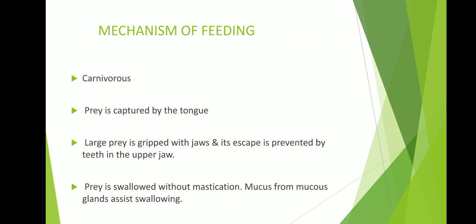The peculiar features of the frog's tongue: its anterior end is only attached to the buccal cavity, but the posterior end of the tongue is free. The posterior end has two lobes, that's why we call the tongue a bifid tongue. The movement of the tongue is amazingly rapid — it can be flicked out and withdrawn in about one-tenth of a second.